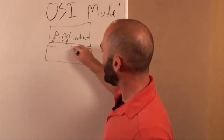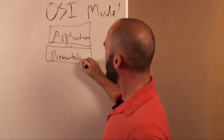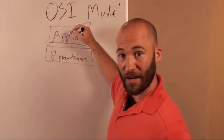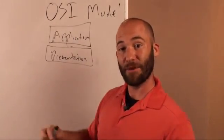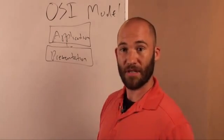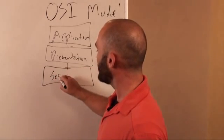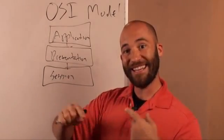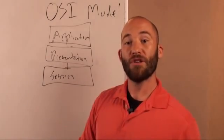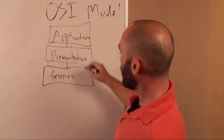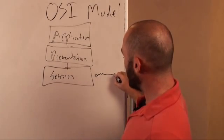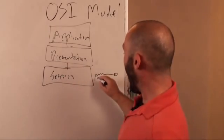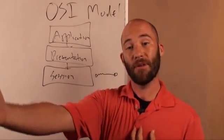Underneath that is the presentation layer. This layer is basically the layer that the operating system is on. You interact with the application layer, that sends information down to the presentation layer, which is generally the layer the operating system works on. Underneath the presentation layer, you have the session layer. The session layer deals with creating a session between the two computers. If you are going to a website, your computer at the session layer has to create a session with the web server you're trying to access to get data from.